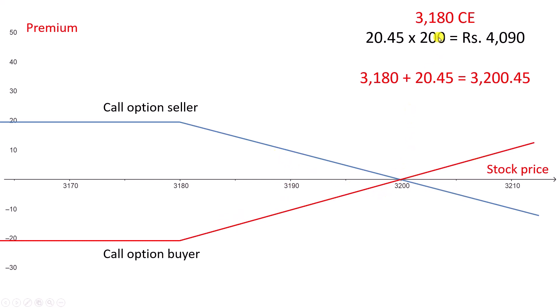In reality, even though the strike price is 3180, if the price of the stock moves above that, the buyer will not be making a profit until it clears the premium. So it is 3180 plus the premium — 3200. The price has to move above this to make a profit.